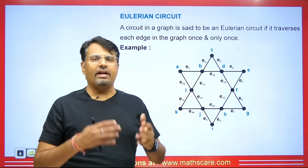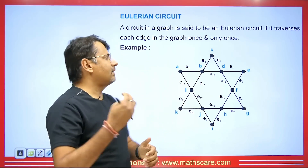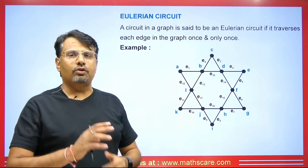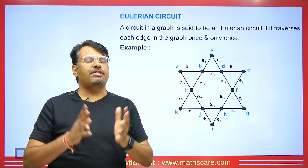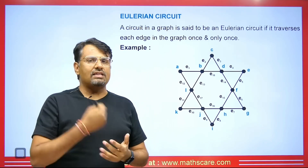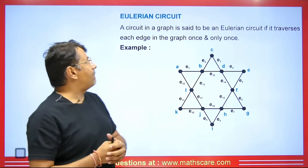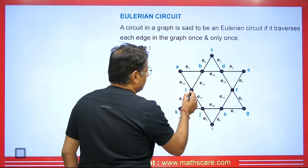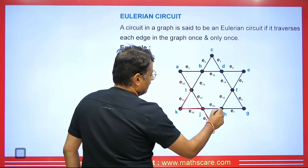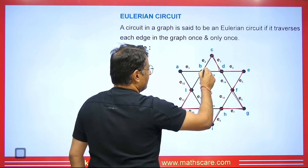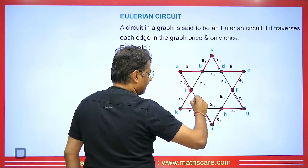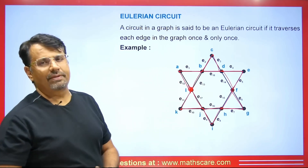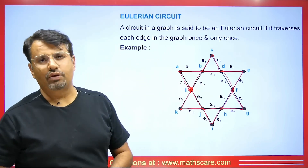Now, Eulerian circuit. Whenever we talk about a circuit, we apply the closed concept. A circuit in a graph is said to be an Eulerian circuit if it traverses each edge exactly once and only once, and additionally it must be closed — ending at the vertex it started from. So three conditions: cover all edges, no repetition, and it must be closed. For example, starting here and covering all edges while returning to the starting point gives us an Eulerian circuit.